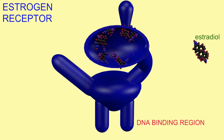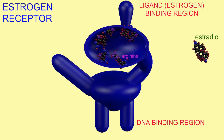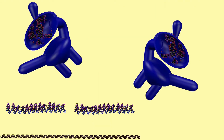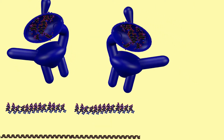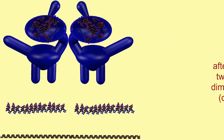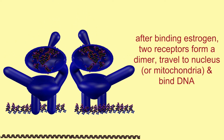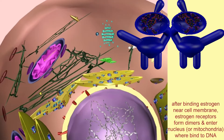Estradiol binds estrogen receptors, both alpha and beta, and these are then transported to the nucleus where they can activate the transcription of genes. Estradiol is not the only steroid produced in these metabolic reactions, and some of the other steroids can also bind these estrogen receptors and turn on gene transcription, and thus act as estrogens.